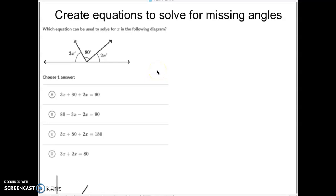Hey, good morning Math 7 students. This next con is called Create Equations to Solve for Missing Angles. Not really that difficult. What you have to realize is just what kind of angle you're looking at.